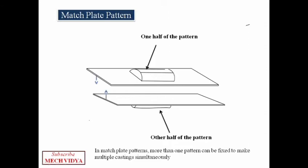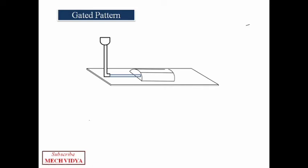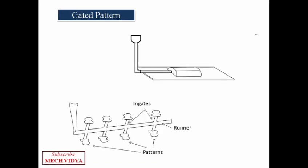Then comes the gated patterns where the gates are a part of the pattern itself - that is, the operator does not have to cut the gates manually, thus it saves a lot of time. Now multiple patterns can be fixed to the runners sidewise, and when we pour molten metal, the metal will flow through the sprue, then the runner, and finally into the individual patterns through the ingates. These are suitable for industries where maximum production of parts is required.